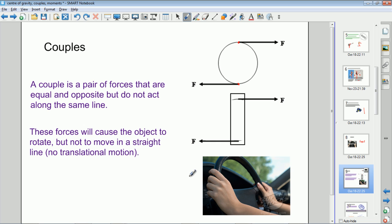When you're driving along in a car, if you want to turn right you push upwards with your left hand and pull downwards with your right hand, therefore creating two equal and opposite forces on the steering wheel which causes it to turn.